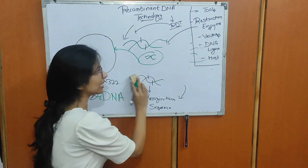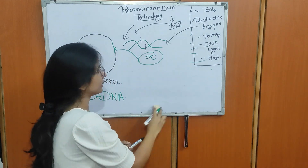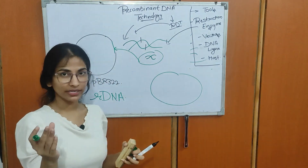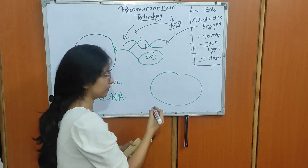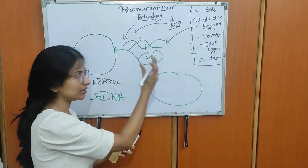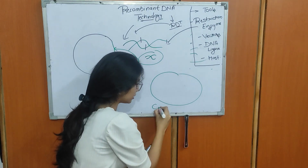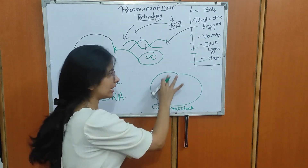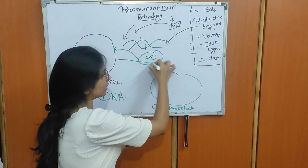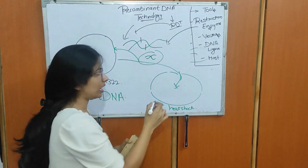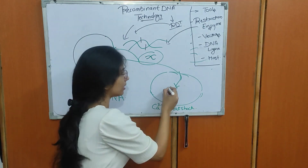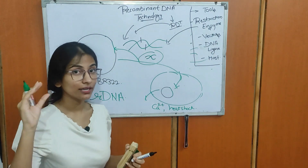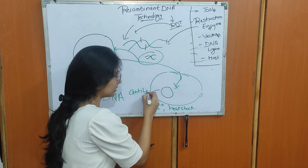For the last tool — the host — let's take E. coli as our example. E. coli is our host, and to make it competent we treat it with divalent cations because it cannot take up DNA as-is. We give it heat shock, then put it on ice. This creates pores on the membrane; our recombinant DNA enters through these pores, and then ice seals those pores. Now inside E. coli we have our recombinant DNA.